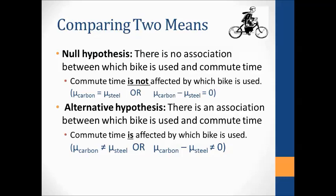Moving into comparing two means: this example was a British doctor who rode his bike to work and got a new carbon frame bike, wanting to see if there was a difference in commute times between the two bikes. A coin was randomly flipped to decide which bike he'd use each day. The null is that there's no association between which bike is used and the commute time — the two long-run means are the same, or their difference is zero. The alternative is that there is some association, so we're doing a two-sided test.